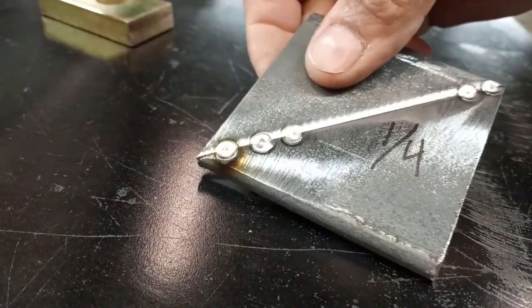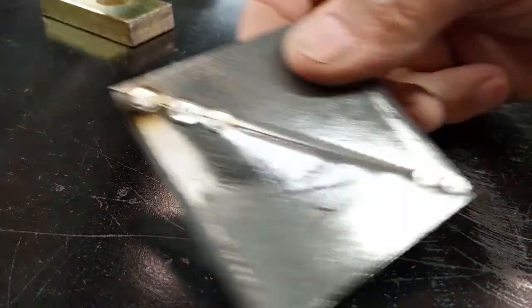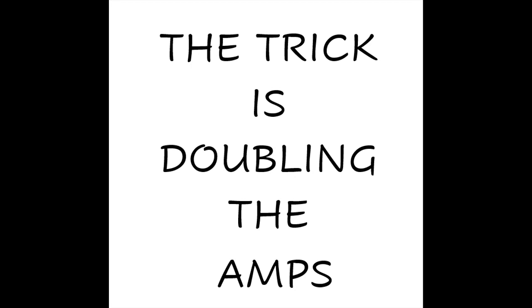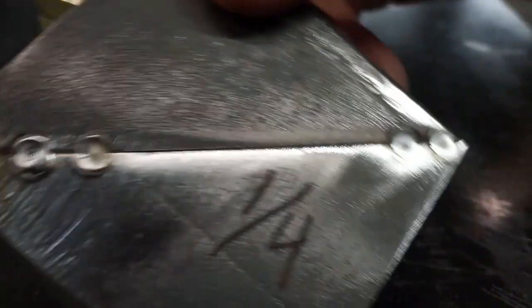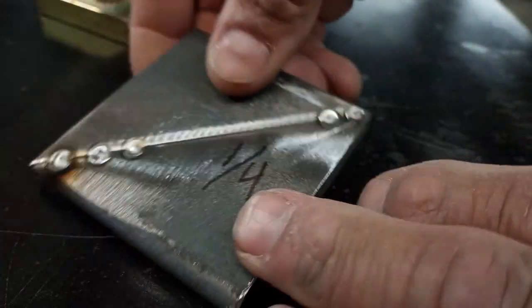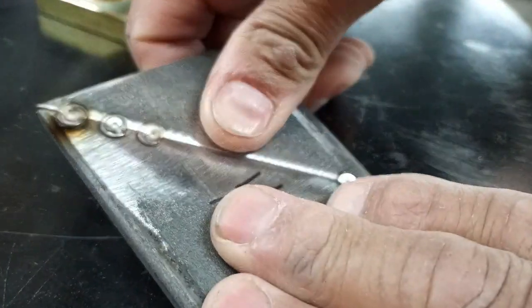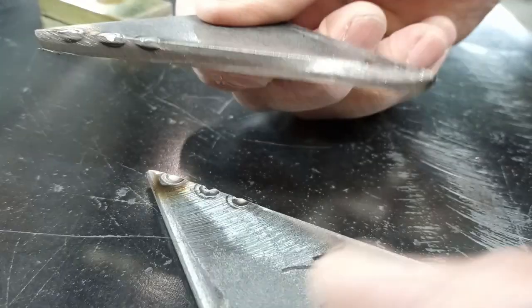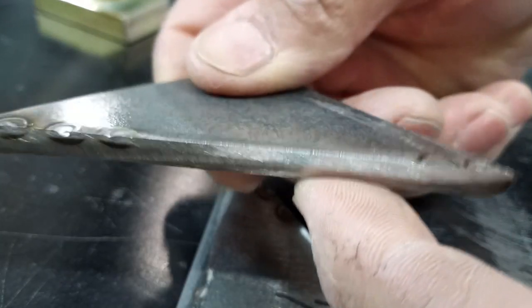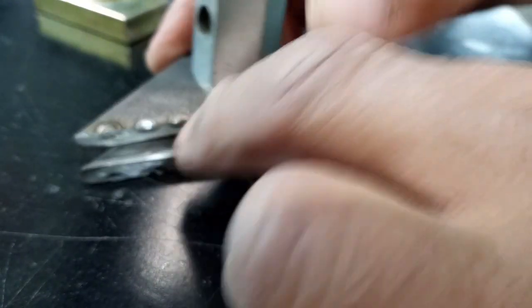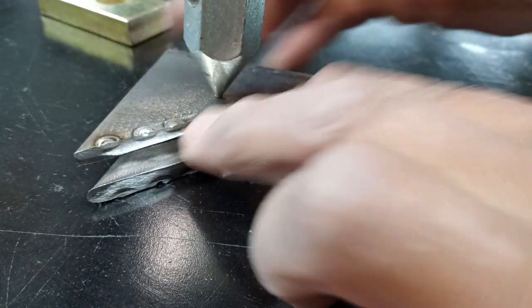Now the second key is you double the number of amperage that you're using on that given thickness of metal. Now we all know that the rule of thumb is one amp per thousandth thickness of material. Well, you just double it with this method. And that was a butt joint.